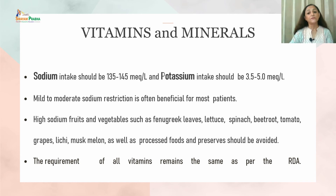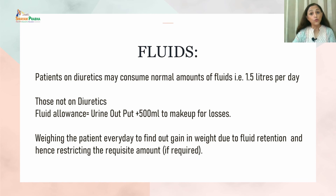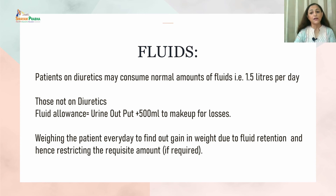Vitamin requirements remain the same as per the recommended dietary allowance. Regarding fluids, patients on diuretics may consume normal amounts — around 1.5 litres daily. For those not on diuretics, fluid allowance is calculated as the previous 24-hour urine output plus 500 ml for losses through other channels. Daily weighing of the patient is needed to monitor weight gain due to fluid retention, and restriction is based on that.